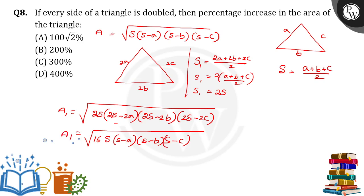So A dash is equal to square root of 16, which is 4, times root of S into S minus A into S minus B into S minus C, which is equal to 4A.